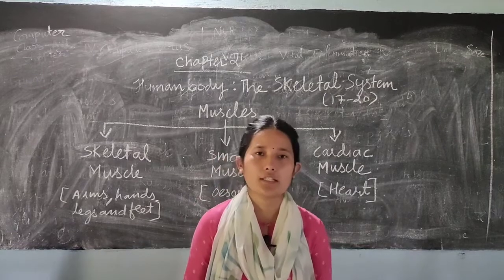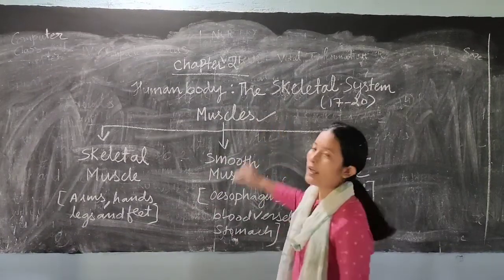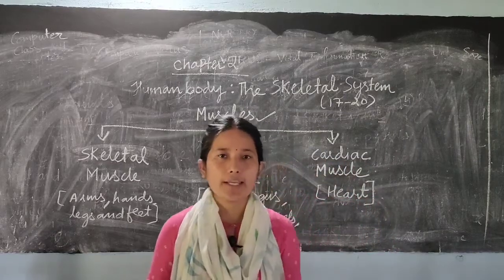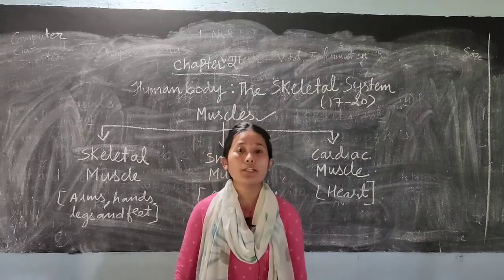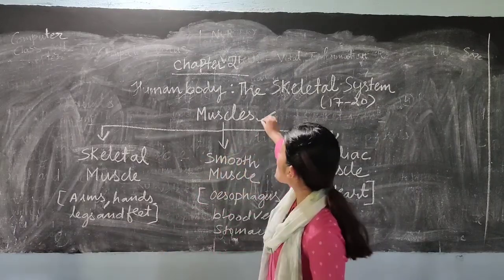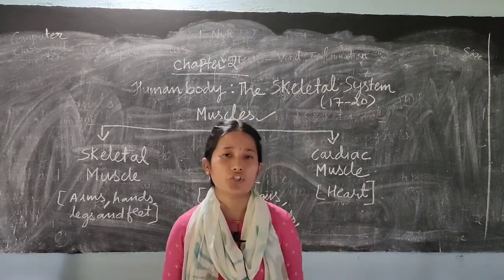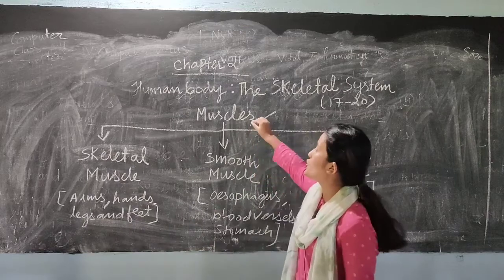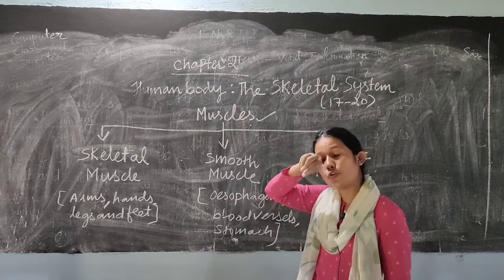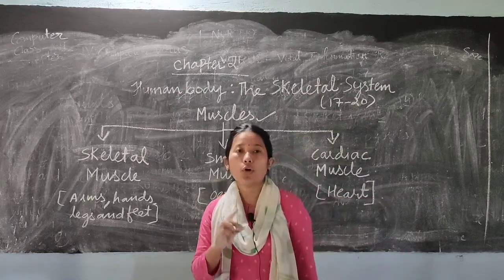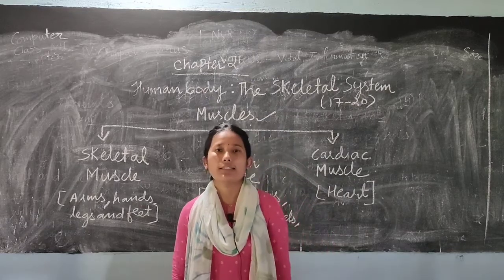Next we will be discussing about muscles. All animals show movement — they can move from one place to another. That movement is brought about by muscles along with the bones. So bones are covered with a tissue called muscles. Your bones and muscles are attached with the help of a tissue known as tendons.